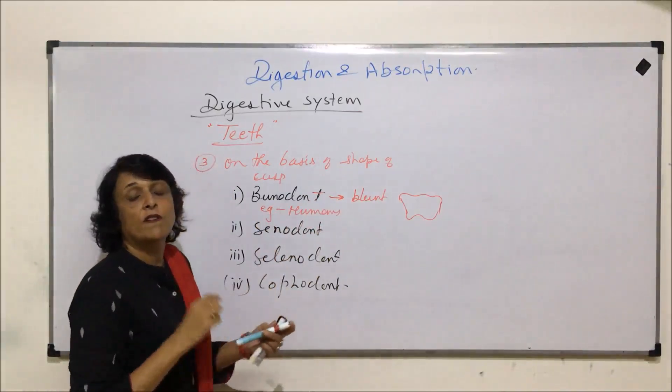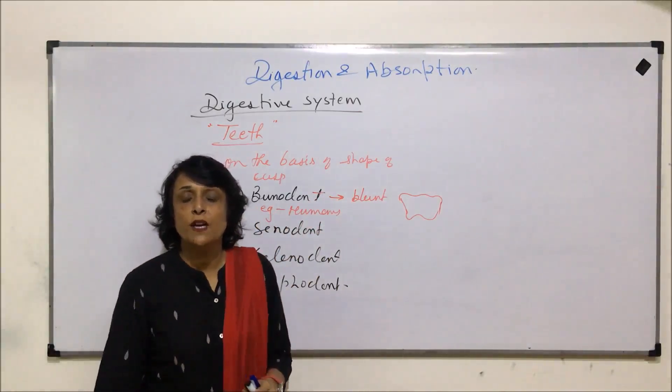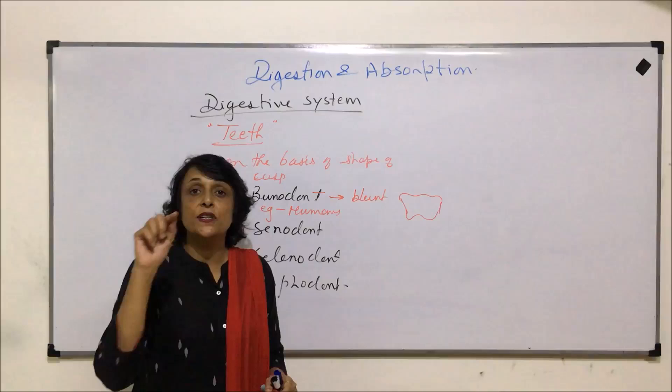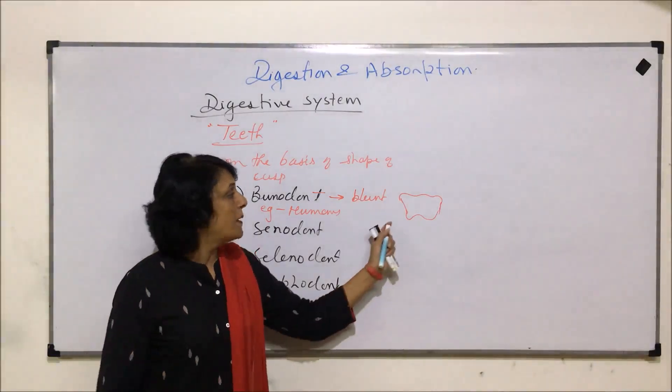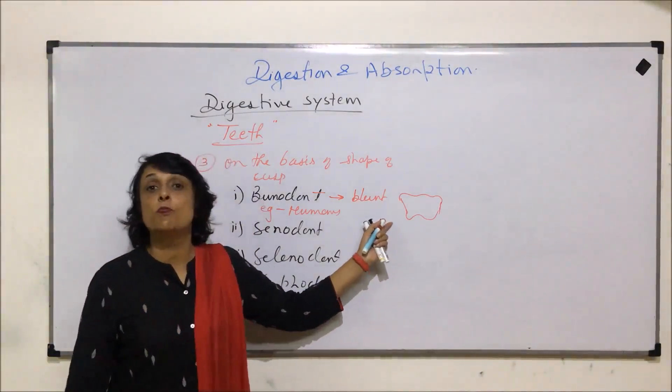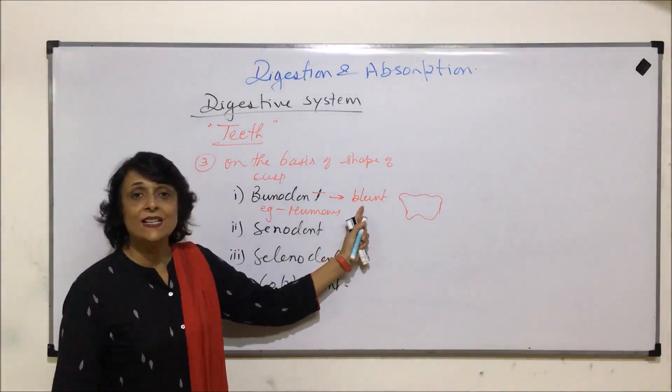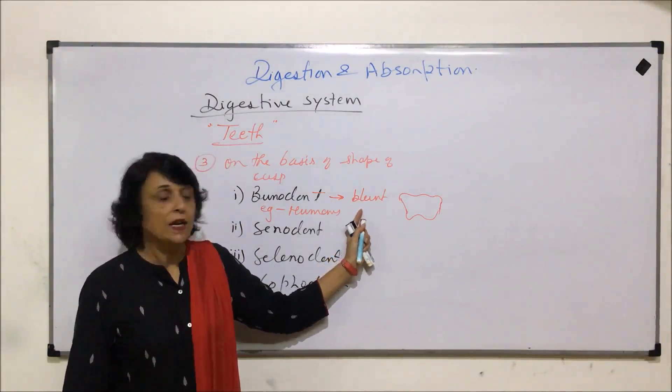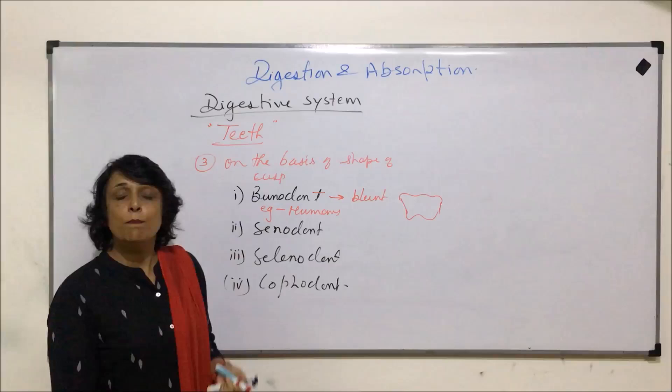If we move our tongue on the molars and premolars, we find that there are ridges, there are bulges. But those are smooth, blunt, they are not pointed. And such blunt cusped teeth are called bunodont.